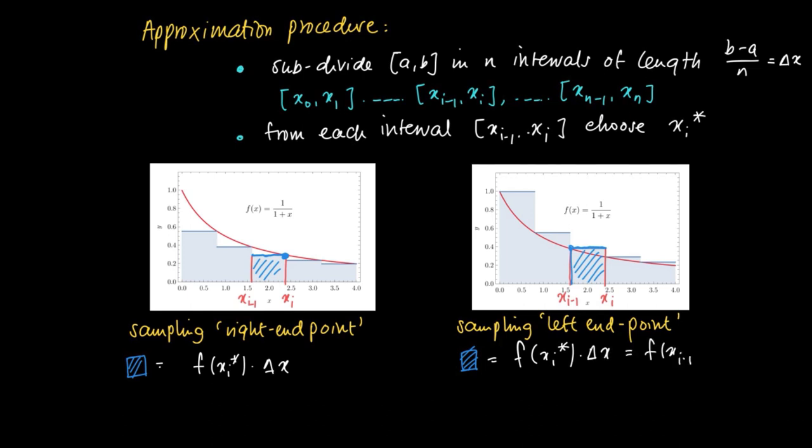But in this case, it's f(xi minus 1), being the left point of the interval [xi minus 1, xi], and on the left-hand side, we see f(xi) times delta x.